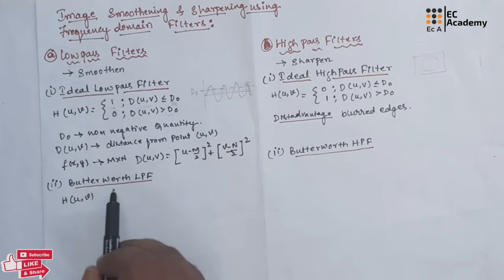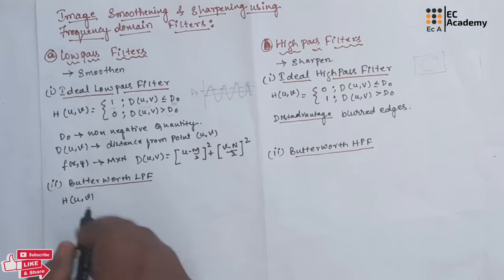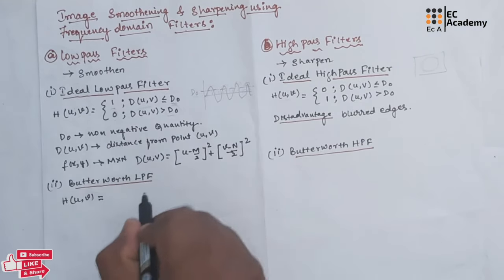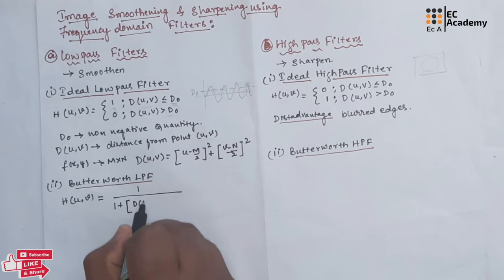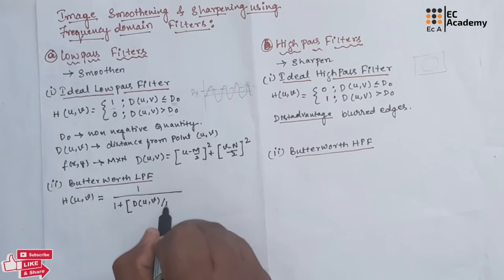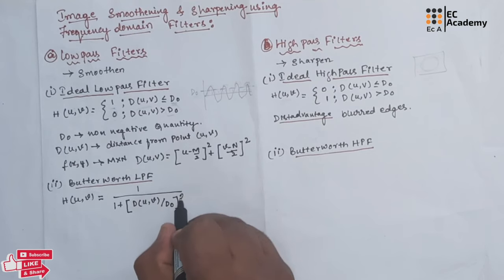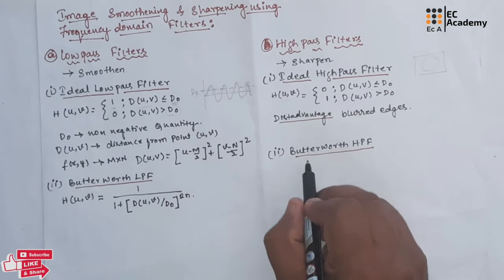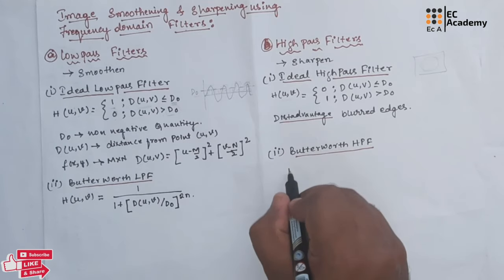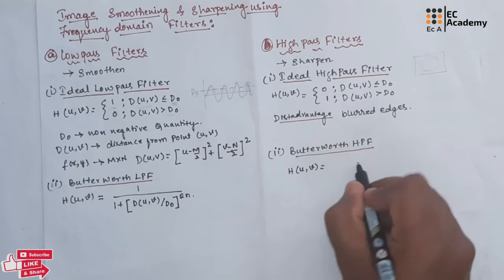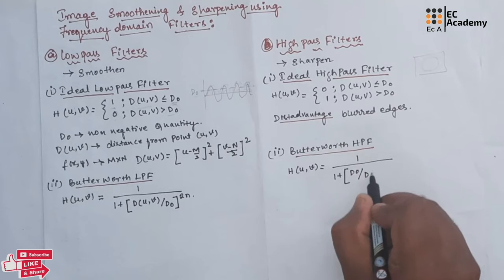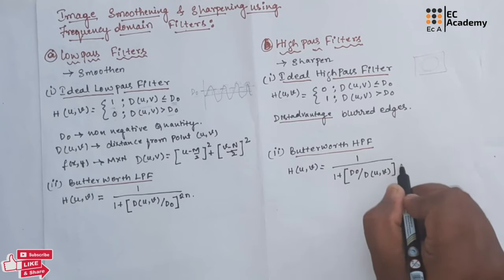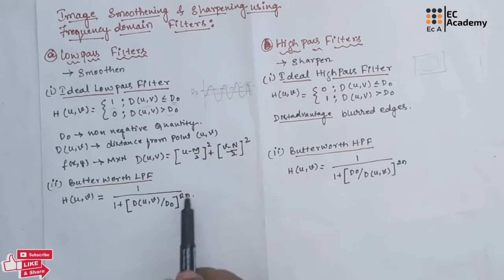The second type of low pass filter is the Butterworth low pass filter. Its transfer function is: H(u,v) = 1 / (1 + (D(u,v) / D0)^(2N)). The Butterworth high pass filter transfer function is: H(u,v) = 1 / (1 + (D0 / D(u,v))^(2N)), where N = 0, 1, 2, 3, 4, and so on.